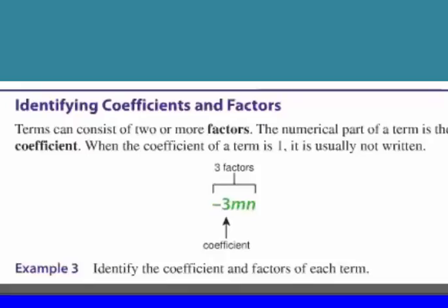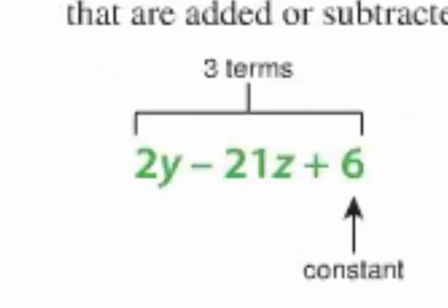Now the coefficient. Coefficient is a term that refers to the number portion of a term. So the coefficient here is negative 3. Look back up to the top where we have in the first set of terms there where it has three terms. We have 2y. 2 is the coefficient. But 2 and y are both factors because they're multiplied together.